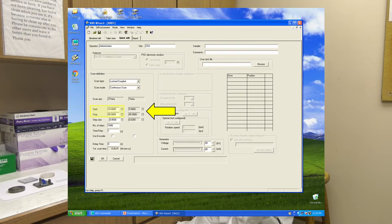The user can set the two theta scan range, step size or number of steps per scan, and time per step. The X-ray generator power for the scan can be adjusted up to 40 kilovolts and 40 milliamps.